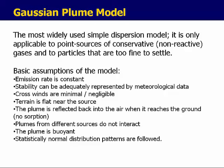The model we're going to review is called the Gaussian Plume Model. It is a simple dispersion model only applicable to point sources of conservative or non-reactive gases and particles that are too fine to settle, so gravity is not a major factor. There are many assumptions to this model. In reality, models that get used are much more complicated.